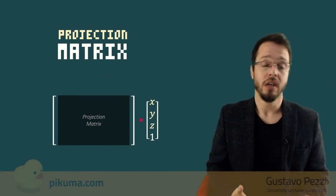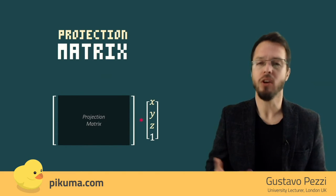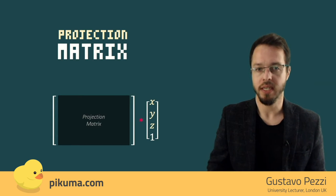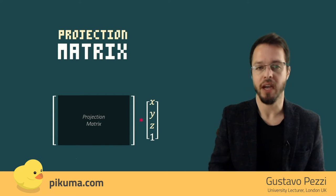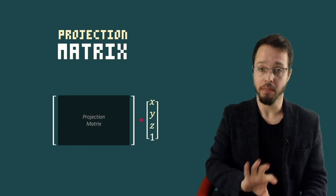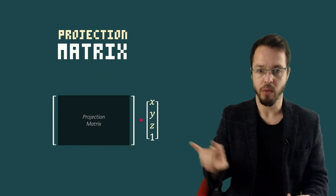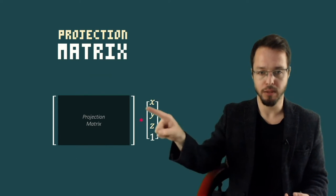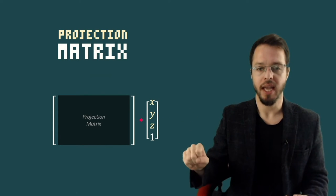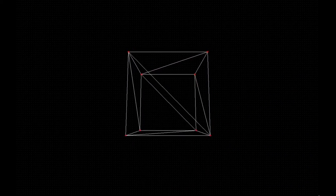Alright everyone, we just learned in previous lectures that we use matrices to encode the ideas of translating, rotating, and scaling vectors. By multiplying these matrices by our original vector, we change the x, y, and z values by doing multiplication — we scale, rotate, translate — we perform those affine transformations.